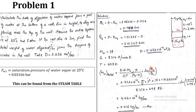We need to find PA1 and PA2. PA1 equals total pressure P minus partial pressure of water vapour at the interface. PW1 is the saturation pressure of water at 25°C, found from steam tables: 0.03166 bar. So PA1 equals 1.01325 minus 0.032, giving approximately 0.98 bar. At the top, dry air is flowing, so PW2 equals 0, giving PA2 equals 1.01325 bar.